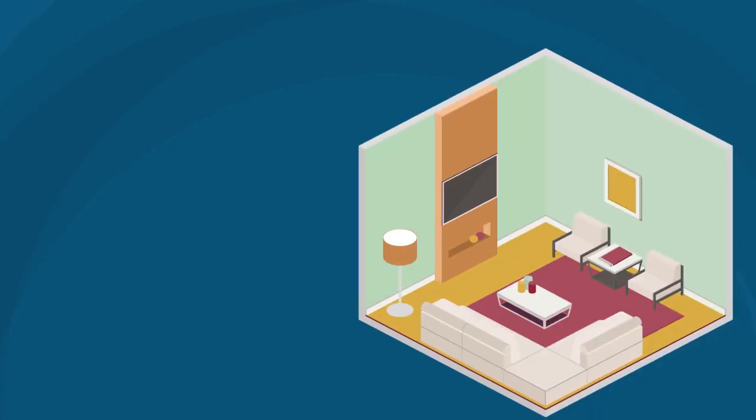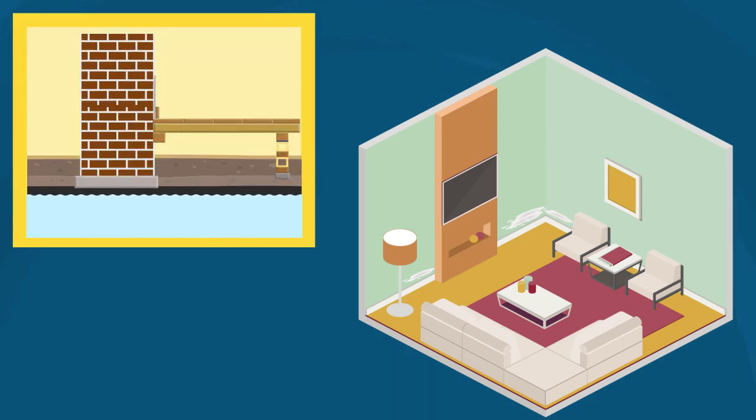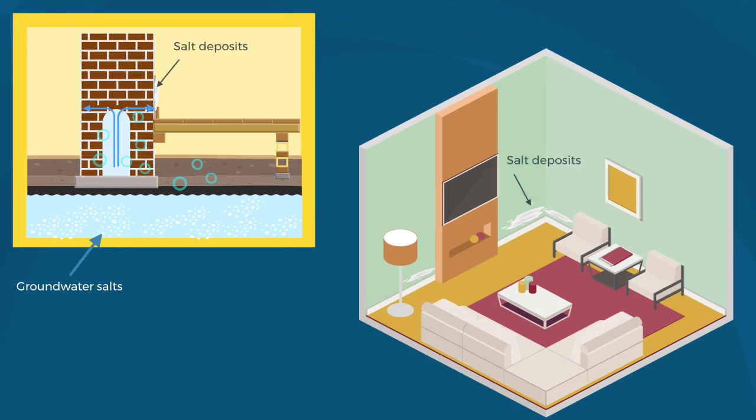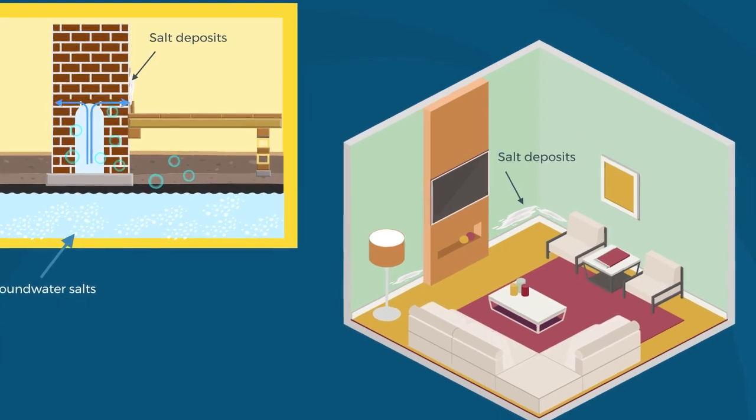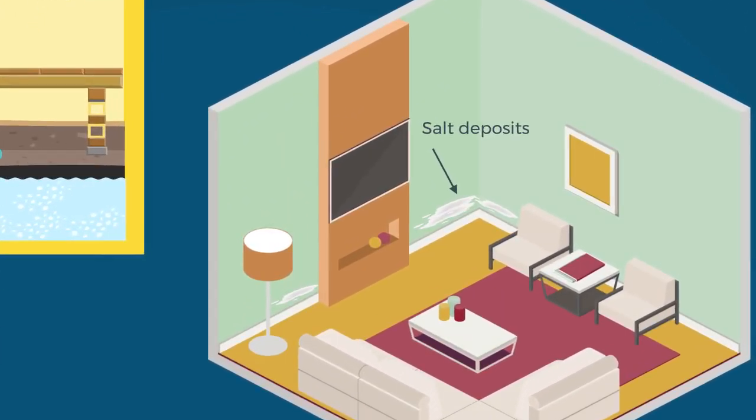Another sign of rising damp is visible salts left on the surface of the plaster. Groundwater frequently contains dissolved salts that rise in the capillaries of the masonry along with the water. As the water evaporates, the salts are left behind, leaving a residue and creating fluffy salt deposits.